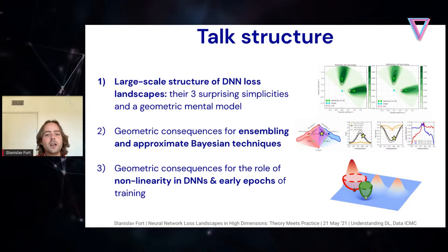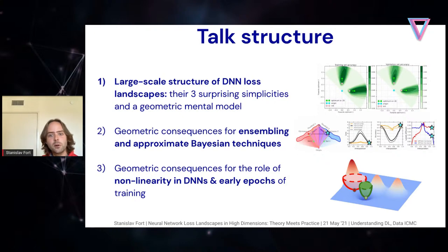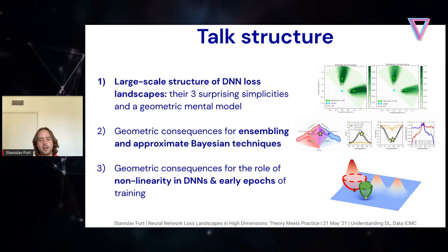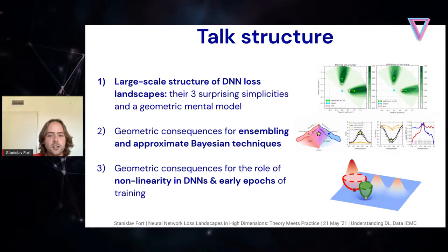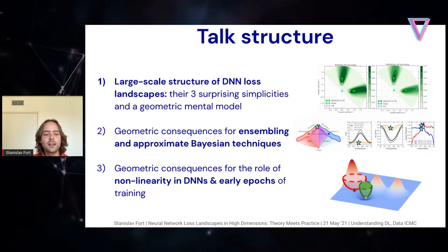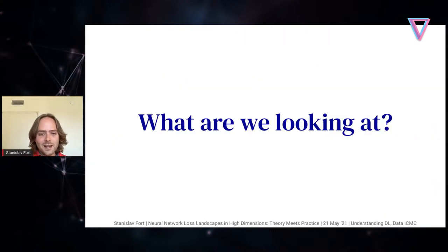Back from philosophy, let me describe the talk structure. First, I'll discuss surprising aspects of the loss landscapes of practically used deep neural networks — three surprising simplicities and a geometric model that incorporates them. Then I'll discuss geometric consequences for ensembling and approximate Bayesian techniques. In the third part, if time permits, I'll describe geometric consequences for the role of nonlinearity in deep neural networks and their behavior in the early epochs of training.